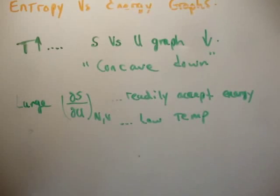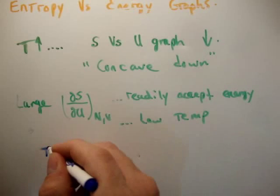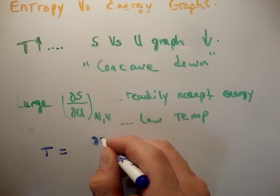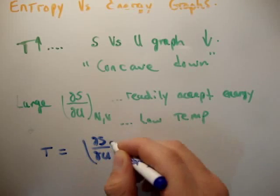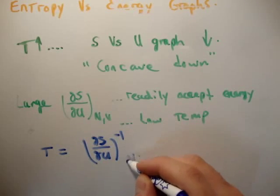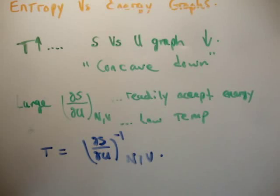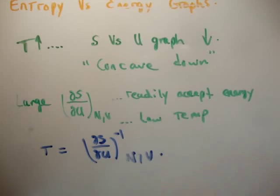Just to remind us, we saw in the previous video that temperature is equal to the inverse of del S del U, constant particles, constant volume. So if it's got a large slope of del S del U, then it's at a low temperature, and it will readily accept energy.